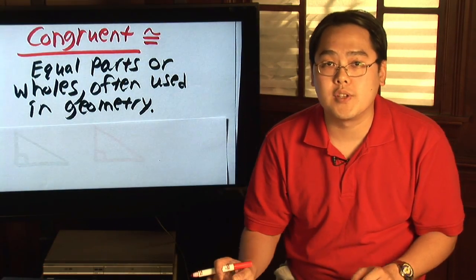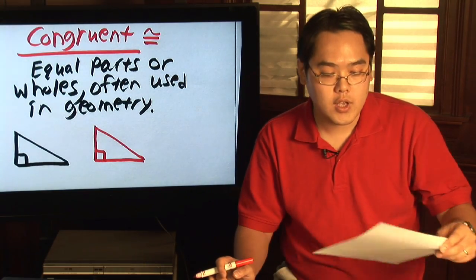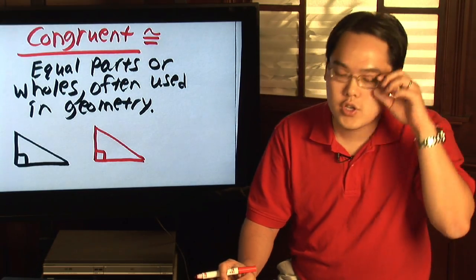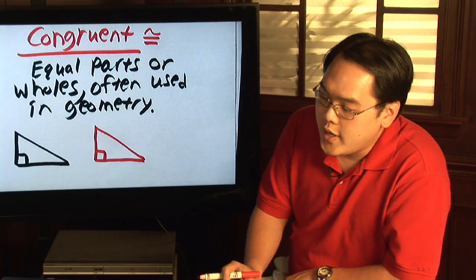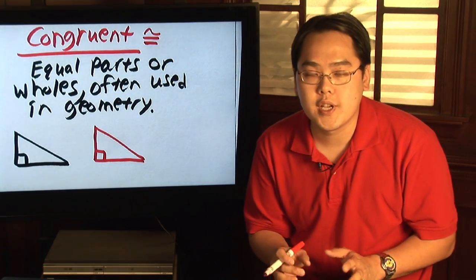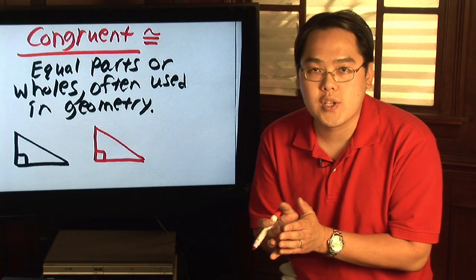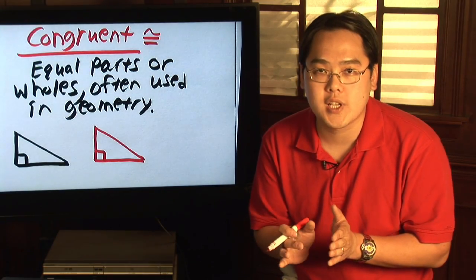Now here's an example as to how congruence can be used, and I want to use triangles as an illustration. You have here two triangles. In order for them to be congruent, they have to have the same equal angles as well as the same lengths for sides.